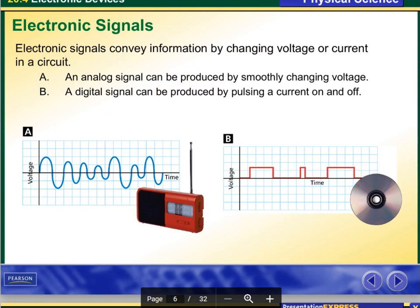For example, right here we have electronic signals. Electronic signals convey information by changing voltage or current in a circuit. An analog signal can be produced by smoothly changing the voltage, which is right here. And a digital signal can be produced by pulsing a current on and off.